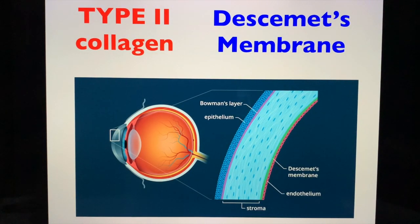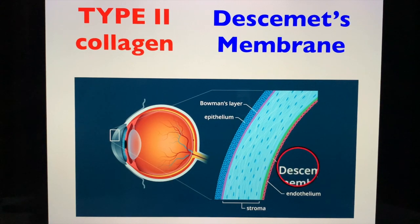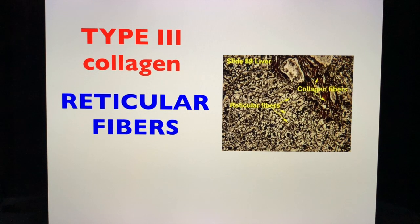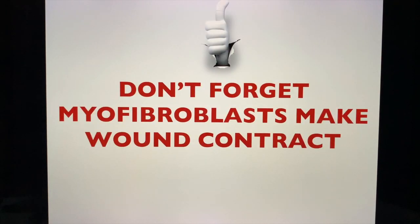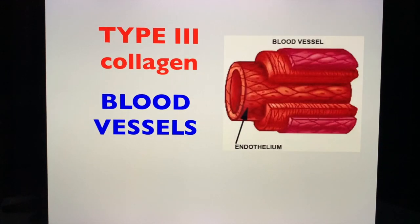Type 2 collagen is also found in Descemet's membrane — that green area shown in the illustration. Now, type 3 collagen is found abundantly in reticular fibers, granulation tissue, healing wounds, and scar tissue. The specific cell that makes wounds contract is the myofibroblast. Type 3 collagen is also abundant in blood vessels.